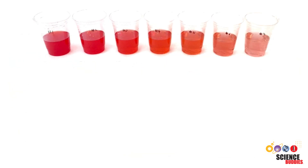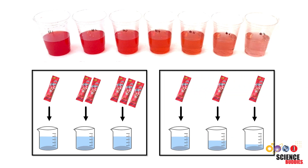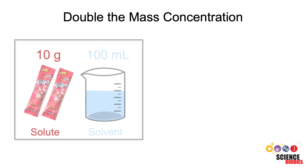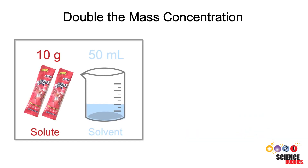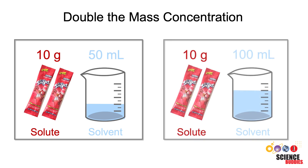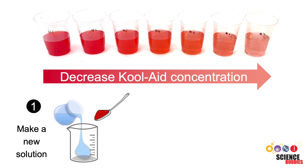These examples show that we can create solutions with many different kool-aid concentrations by either adding different amounts of kool-aid to the same amount of water, or by adding the same amount of kool-aid to different amounts of water. For example, we can double the kool-aid concentration by adding 10 grams of kool-aid to 100 milliliters of water instead of 5 grams. Or we can double the kool-aid concentration by adding 10 grams of kool-aid to 50 milliliters of water instead of 100 milliliters. If you want to decrease the concentration of a solute in a solution, you can either make a new solution that contains less solute or you can dilute your existing solution.